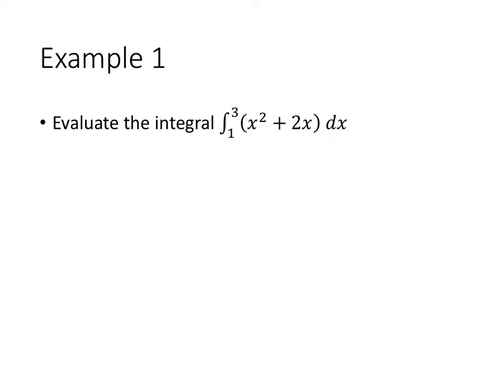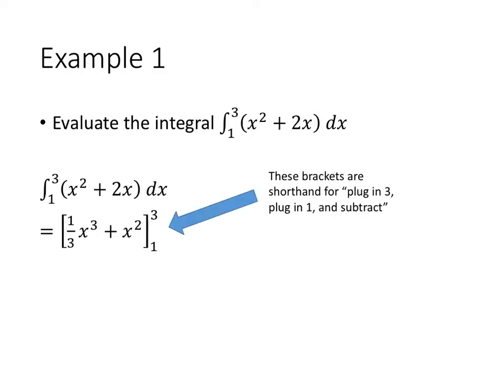So let's do a quick example. Let's evaluate the integral from 1 to 3 of x squared plus 2x with respect to x. Using the fundamental theorem of calculus, the first thing we need to do is find an antiderivative of x squared plus 2x. An antiderivative of x squared is 1 third x cubed, and an antiderivative of 2x is x squared.